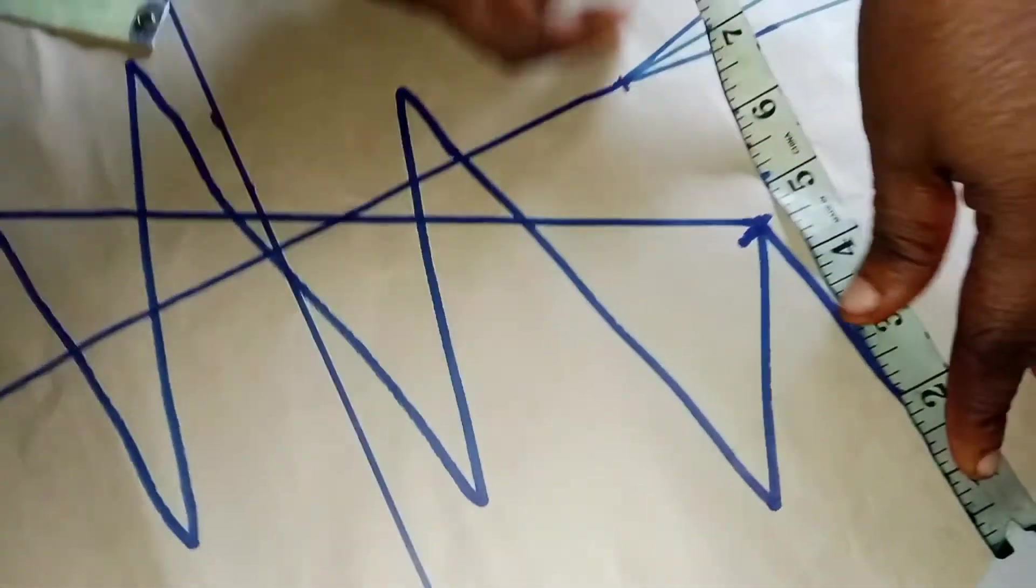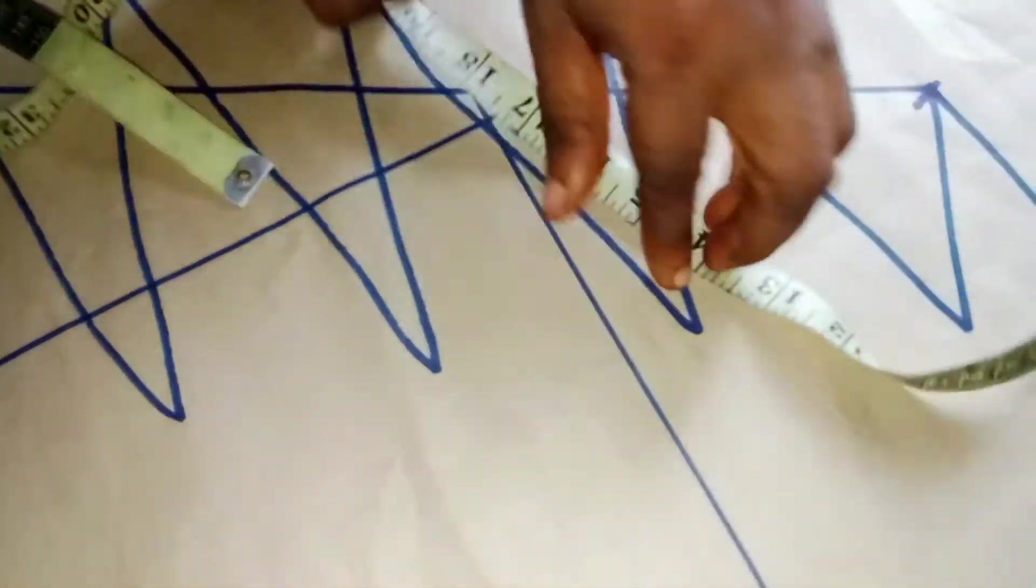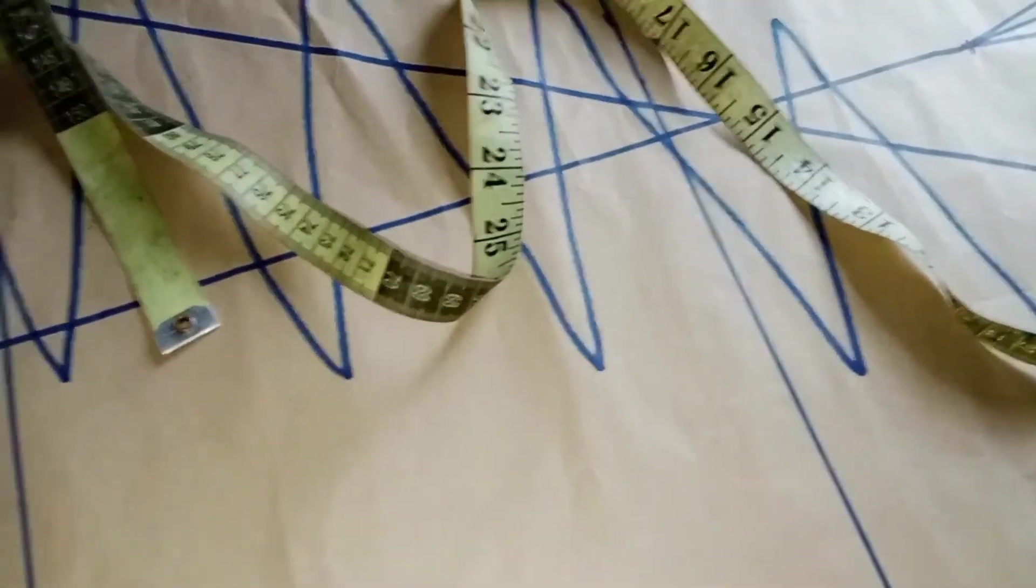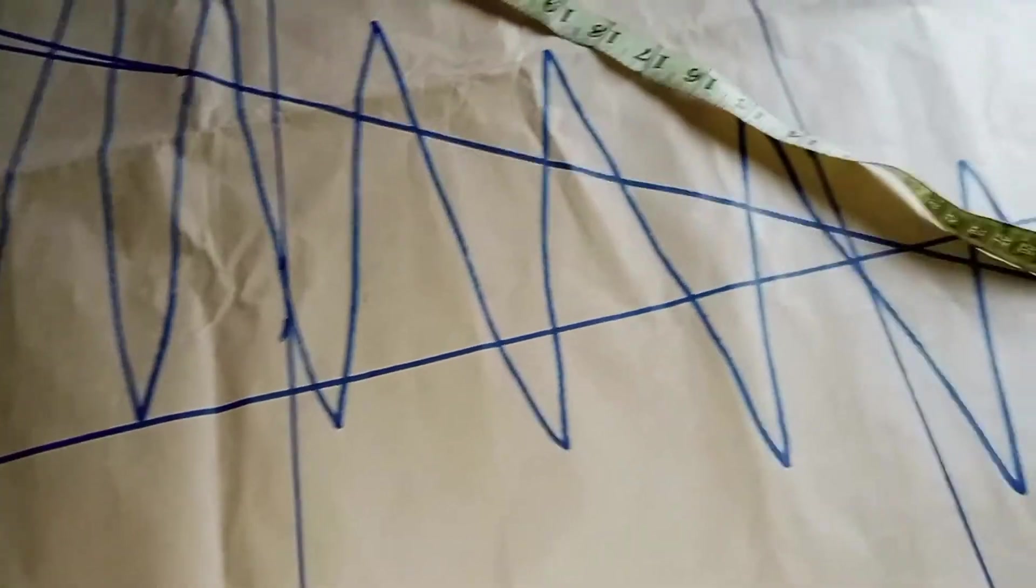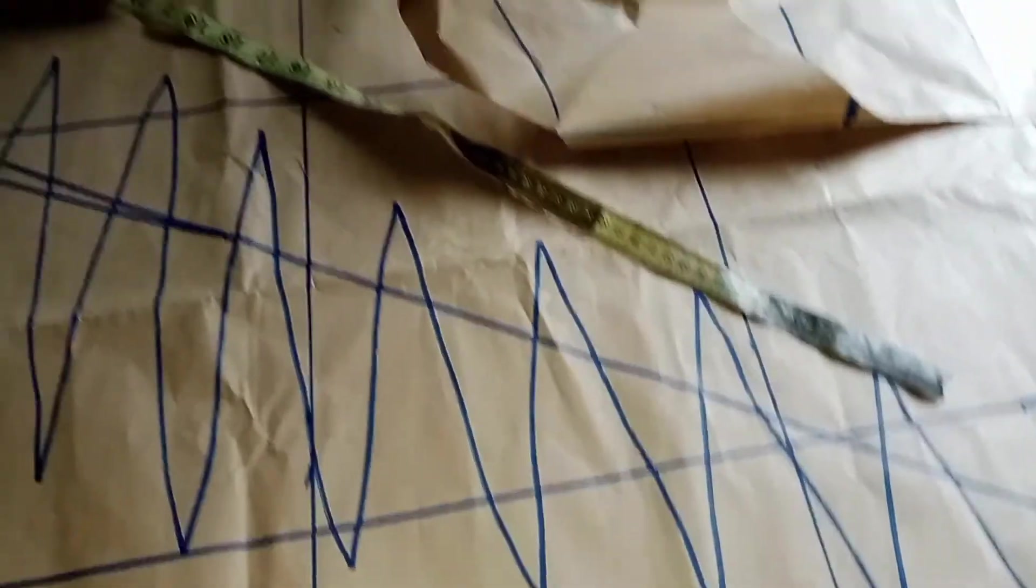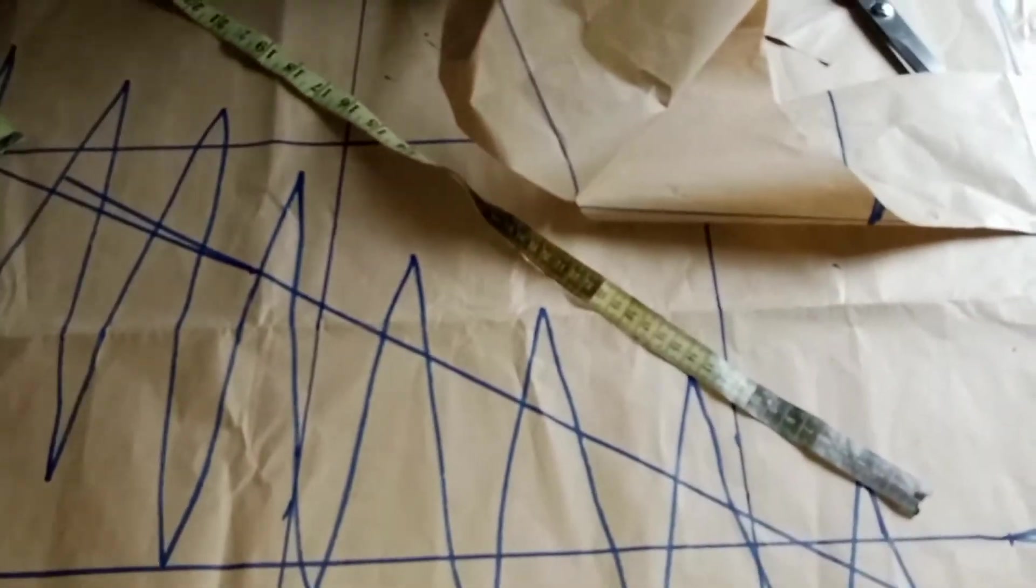Measure it lengthwise. Measure all of them from the beginning to the end, then you get the measurement. After getting the measurement, total it and then times four so that you can have enough gather if you want to gather it.